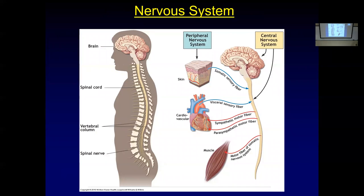Alpha-actinin is often used as a regulatory marker in biopsy samples — its levels are normalized against because it appears to be pretty constant. There is a lot else going on in muscle structure. We're now going to shift from the muscle side and cover some anatomy of the nervous system.